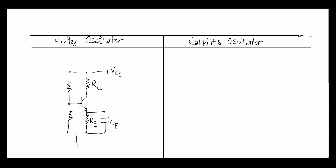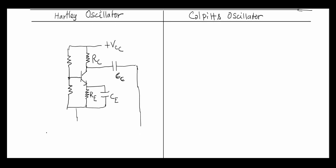You have to provide positive feedback. In the case of the Hartley oscillator, take the output from the collector — since this is a common emitter amplifier, the output is taken at the collector. Use a coupling capacitor CC, and this output should be given to a feedback circuit which consists of two inductors and one capacitor connected across those two inductors.